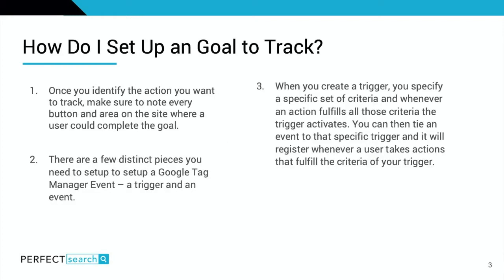So how do you set up a goal to track? Once you identify the action you want to track — whether that's a button click, a page visit, or a form fill-out — you want to make note of every single button or area on the site where a user could complete that goal. For example, if you are tracking a button, you want to be aware of everywhere on the website that button exists, whether it's on the Contact Us page, in the top navigation, or in the footer, and understand whether it's on specific pages or all pages.